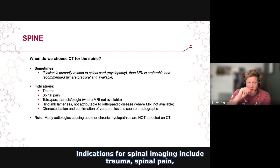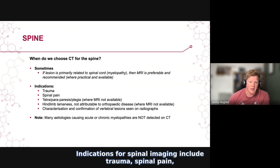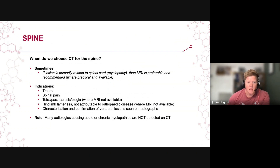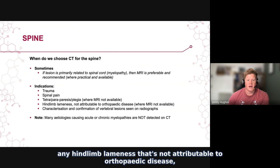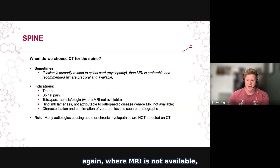Indications for spinal imaging include trauma, spinal pain, the presence of tetra or paraparesis or even plegia where MRI may not be available, and any hind limb lameness that's not attributable to orthopaedic disease, again where MRI is not available.